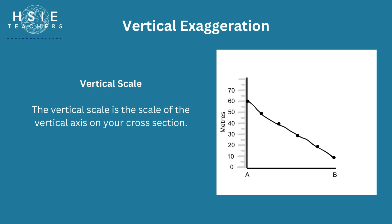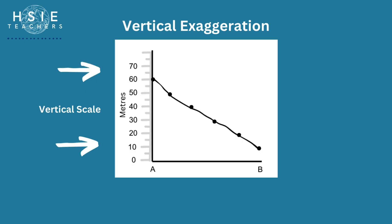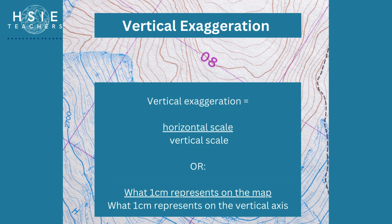The vertical scale is the scale on the vertical axis of your graph. This can be flexible — you may choose to have one centimeter represent 10 meters, or one centimeter represent 20 meters. The idea that there can be flexibility in the vertical scale is why it is important to know how much the vertical scale has stretched out the drawing. Here you can see the vertical scale represented on the vertical axis. Vertical exaggeration is the horizontal scale over the vertical scale — in other words, what one centimeter represents on the map over what one centimeter represents on the vertical axis.